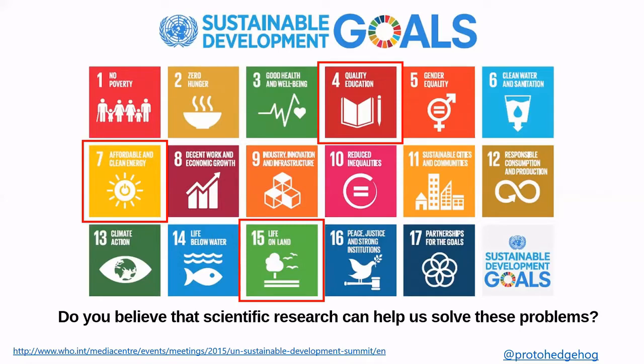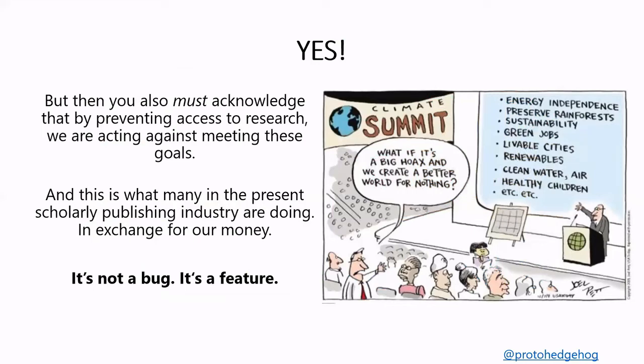Do you believe that scientific research can help us mitigate or solve these problems? The unanimous answer is usually yes. But by the same terms, we must acknowledge that by preventing access to research, we're actually acting against meeting these goals. And sadly, this is what many in the present scholarly publishing industry are doing in exchange for our money. Not all publishers are doing this, but the ones who have a lot of control and dominance of this landscape are.